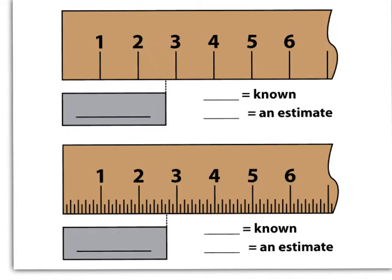So let's look at the top one first. You can see that there isn't a lot of information in this ruler. It goes from one to six. There are no gradations between the numbers. So let's see what we actually do know. What's the known number? Well, the known number is clearly between two and three. So the known number is two.